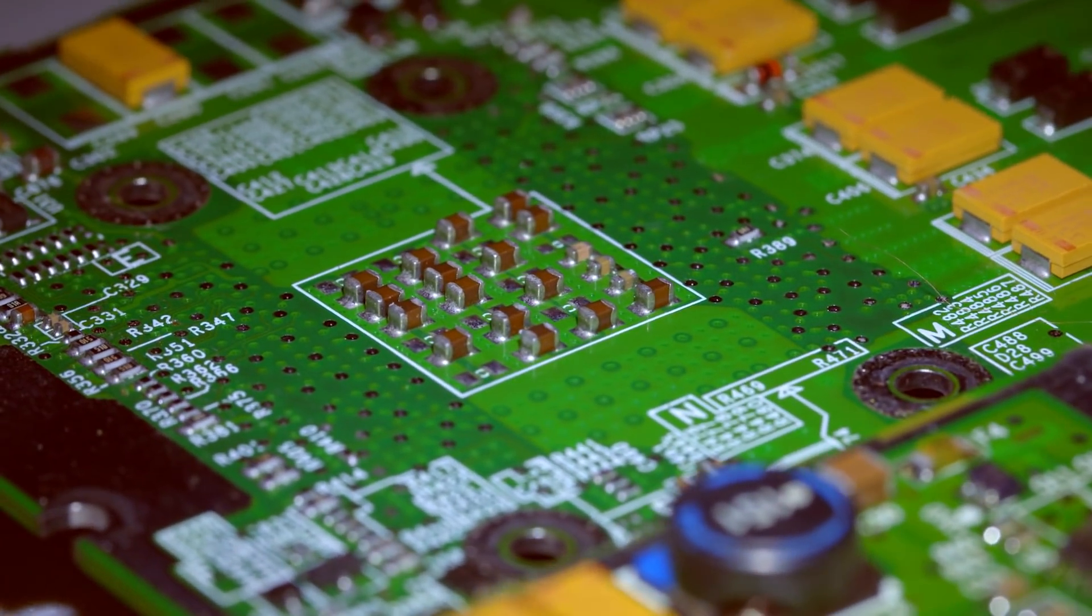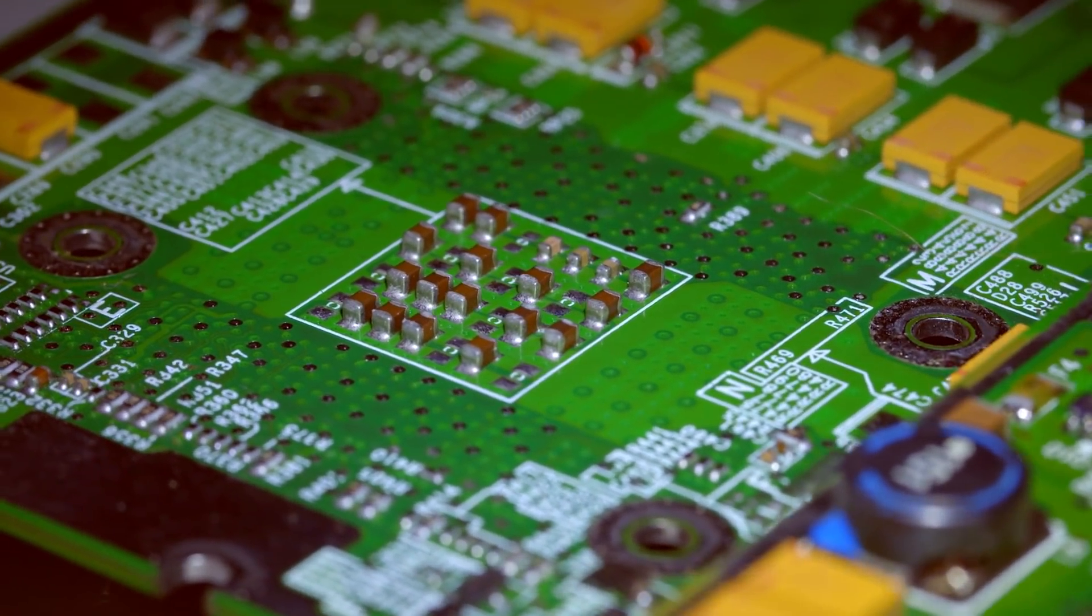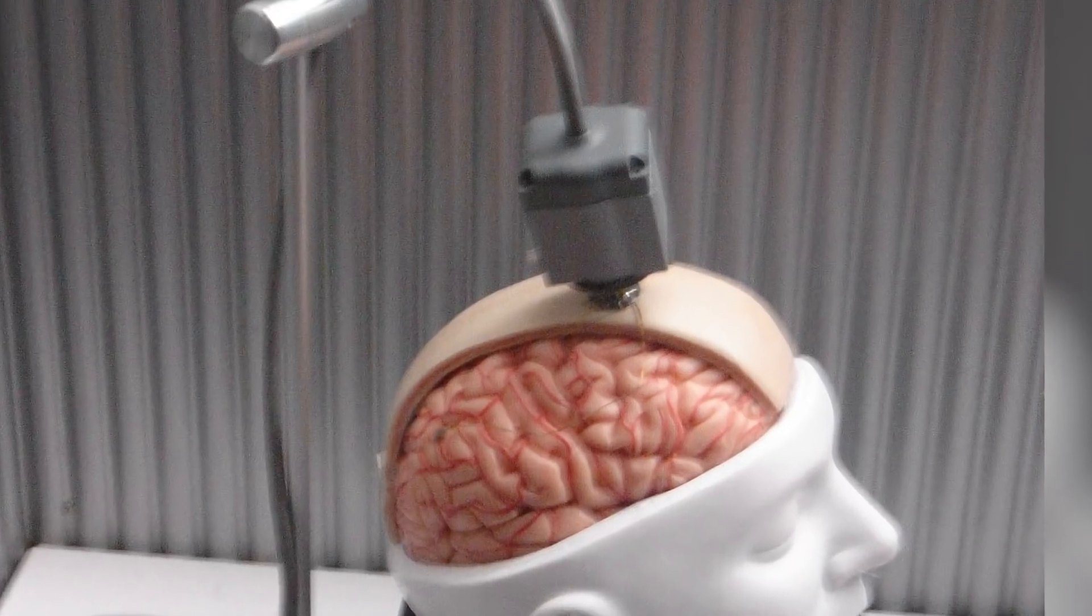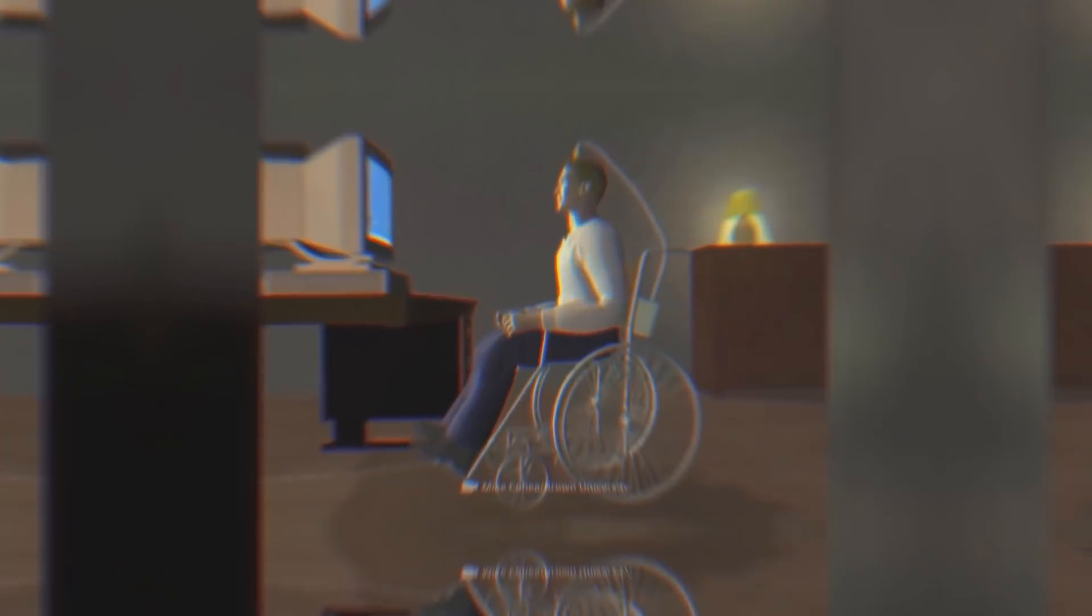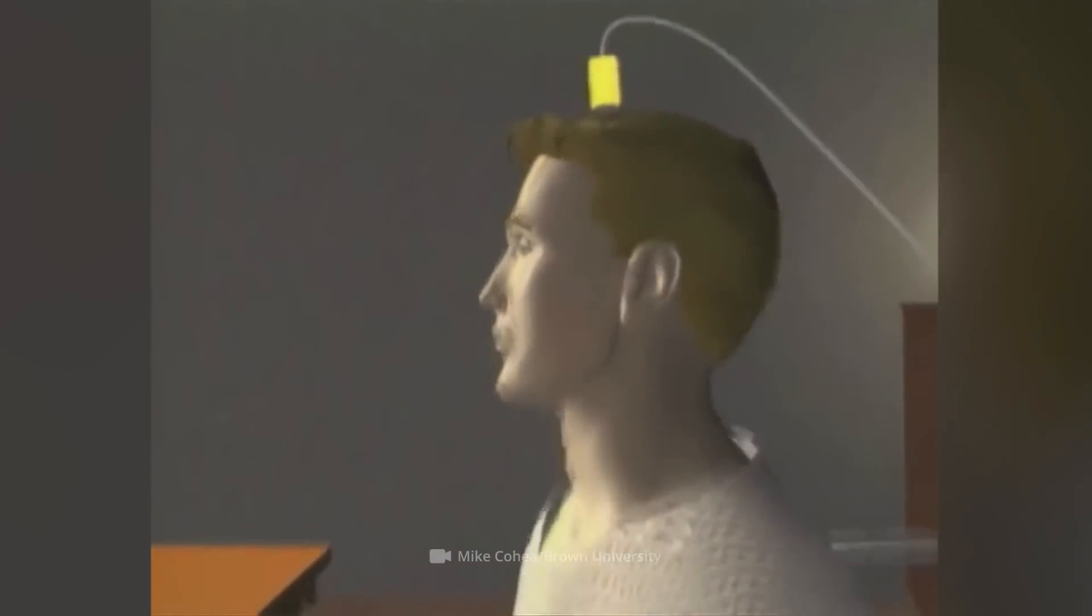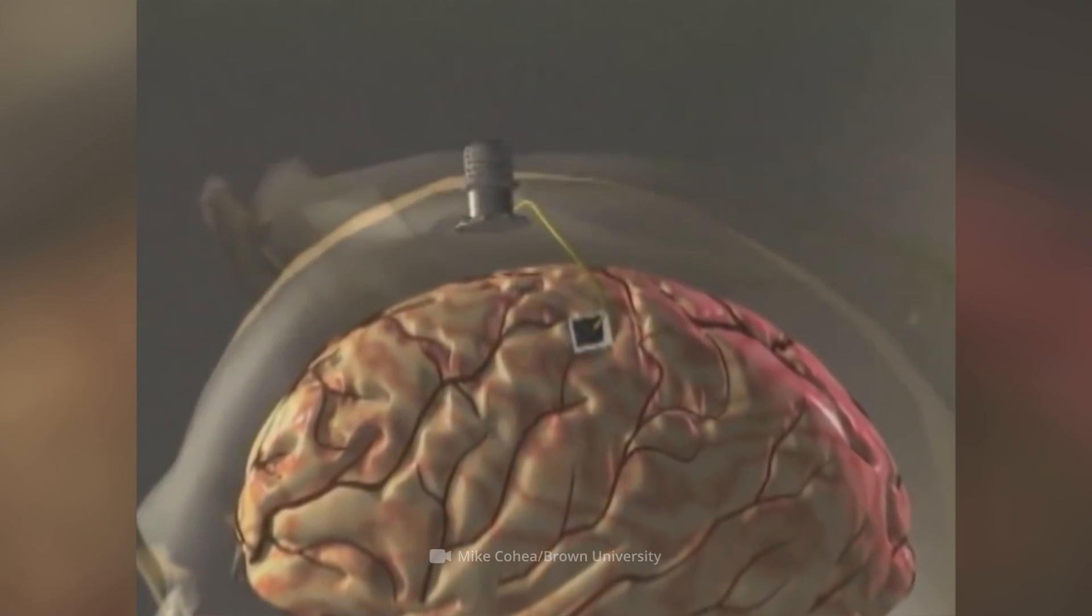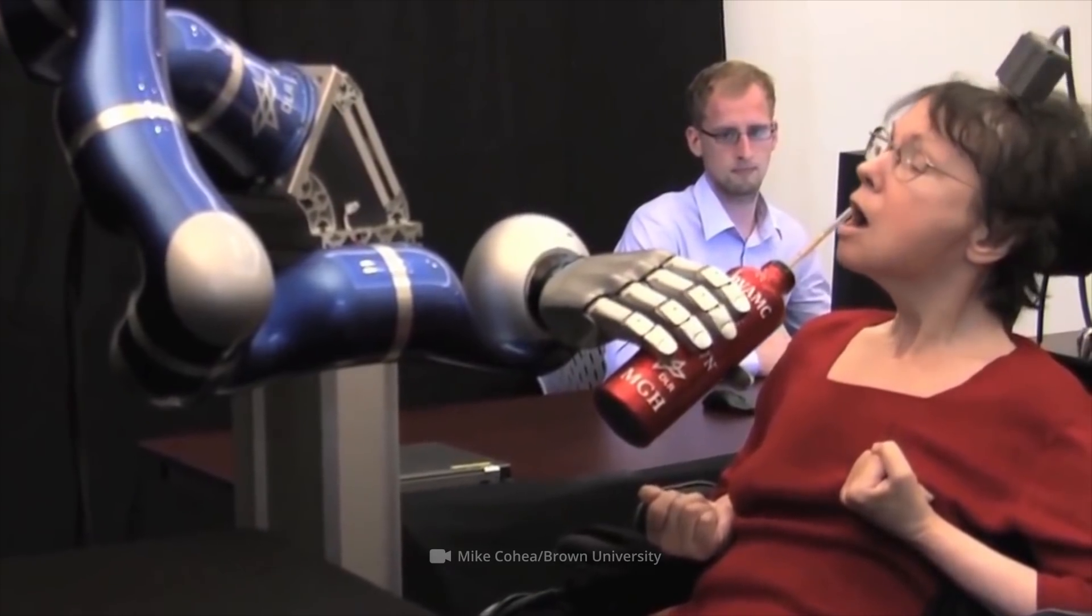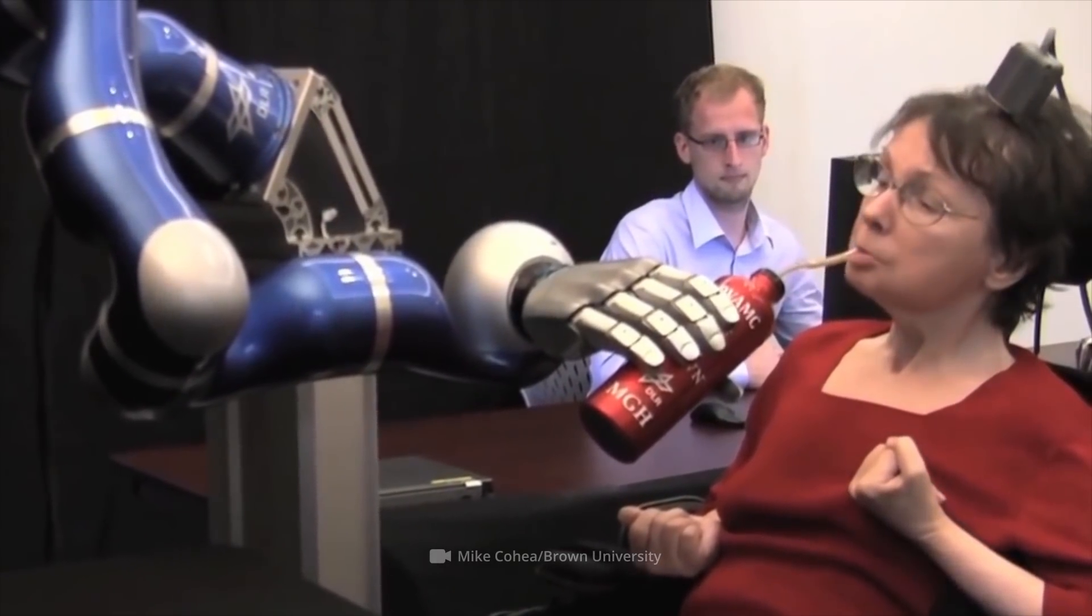But in addition to Neuralink, there are other developments. For example, BrainGate, the so-called brain implant from Cyberkinetics. It's a chip-like mechanism that can help control limbs or other body functions. Thus, people who have problems with mobility will finally be able to move freely.